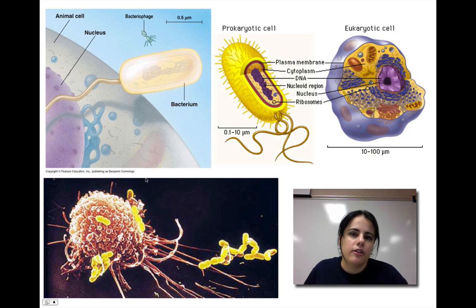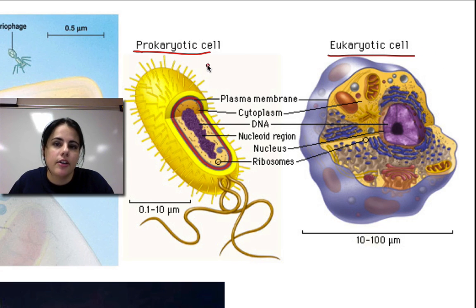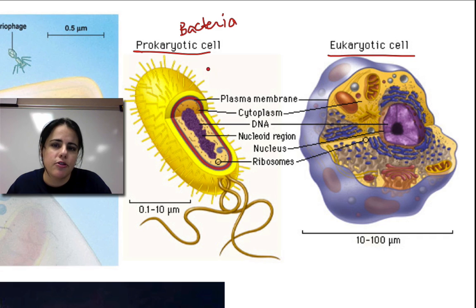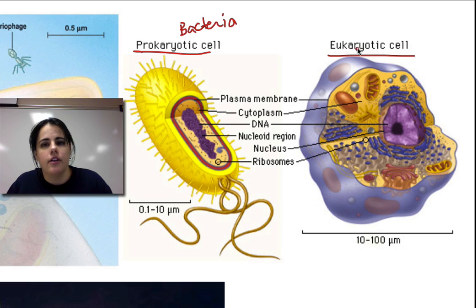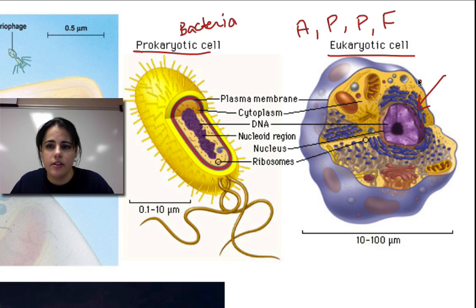Looking at cells, we're going to review. There are two main different categories: prokaryotic cells and eukaryotic cells. A prokaryotic cell is only bacteria — those are the only types of organisms that are prokaryotic. It pretty much means that it doesn't have a nucleus or any of those cell parts inside of it. On the other hand, we have eukaryotic cells. Eukaryotic cells include animals, plants, protists, and fungi. That means there's a nucleus and all these fun little guys inside called organelles that help the cell function and do its job.